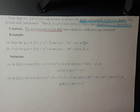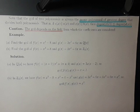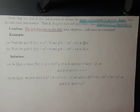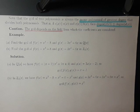One word of caution: the GCD depends on the field from which the coefficients are considered. For example, let's find the GCD of f of x equals x cubed minus 8 and g of x equals 3x squared minus 6x, considered as polynomials with coefficients in the rationals and then in Z2. Over the rationals, we can factor f of x as x minus 2 times x squared plus 2x plus 4, and x squared plus 2x plus 4 cannot be factored further. And g of x equals 3x times x minus 2. So the GCD of f of x and g of x is x minus 2, since this is the monic polynomial of greatest degree that divides both.